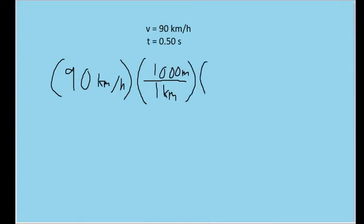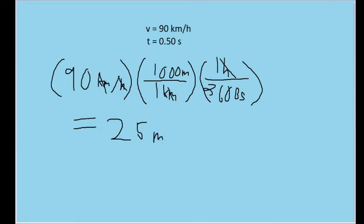And in one hour there are 3,600 seconds. Those units will cancel out, of course. And we are left with a speed of 25 meters per second.